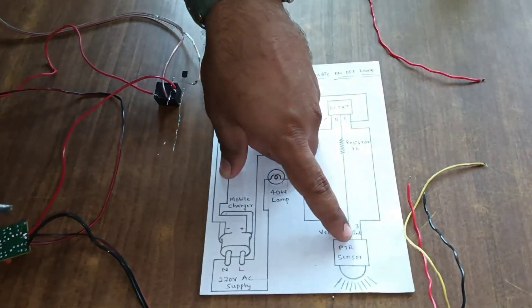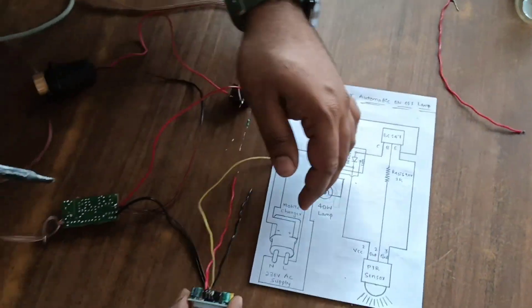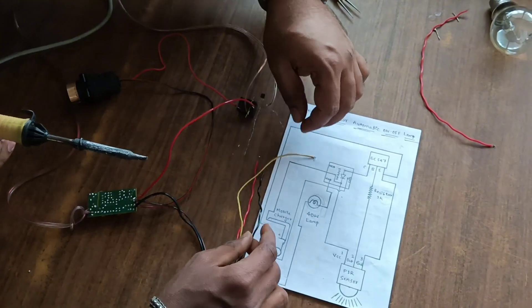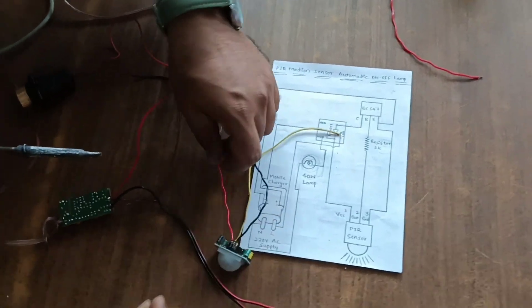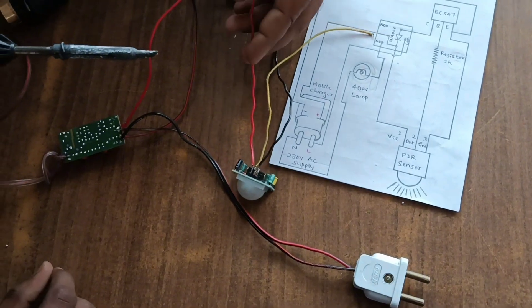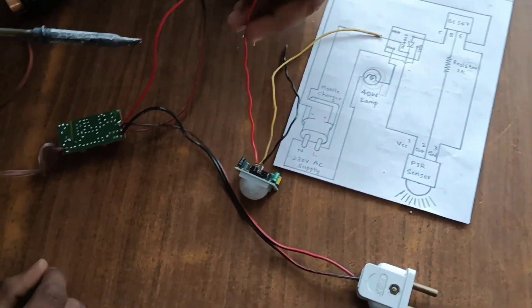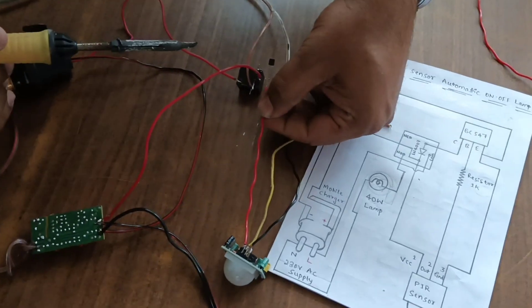Next, connect PIR sensor VCC is connected to cathode of diode.